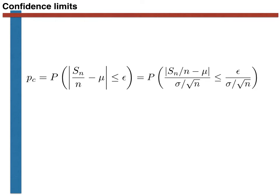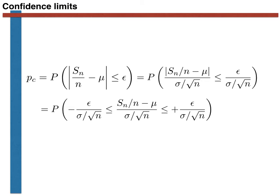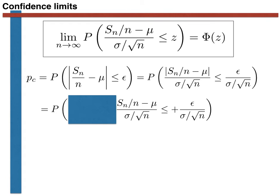In the second step, we recognise that we can rewrite this expression involving a single inequality and a modulus sign using two inequalities. If we now remove the leftmost inequality, we have the probability that appears on the left-hand side of the central limit theorem. We can then replace this whole probability with the term on the right-hand side of the central limit theorem. So we now just need to find the value of the cumulative probability distribution function for a normal random variable at epsilon over sigma over square root of n.